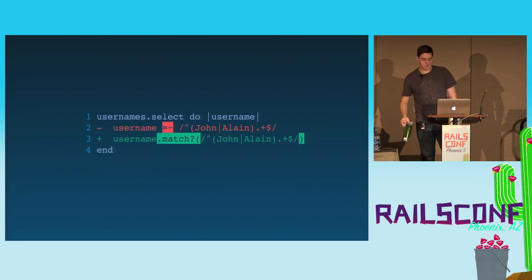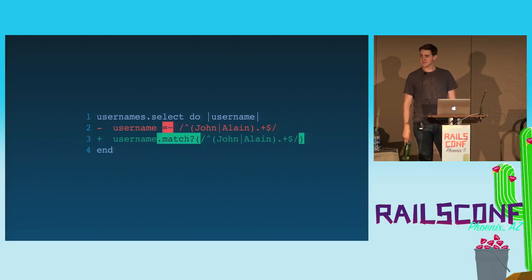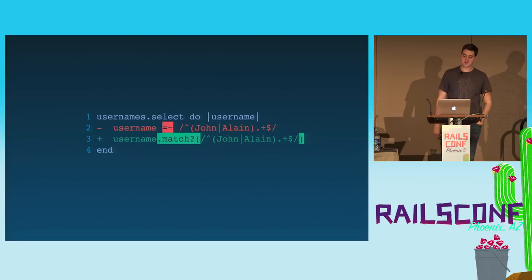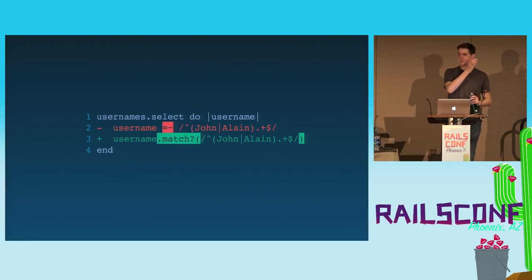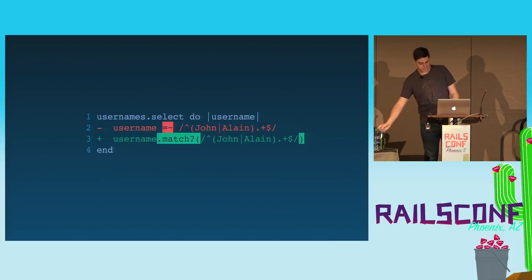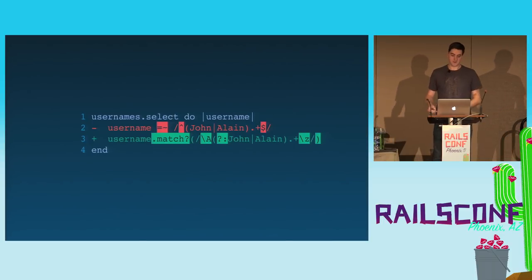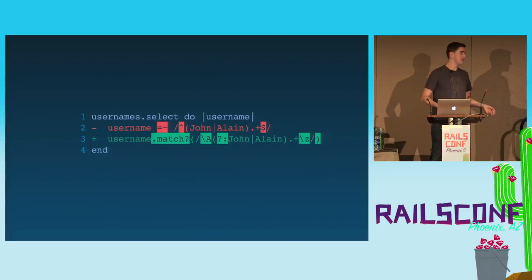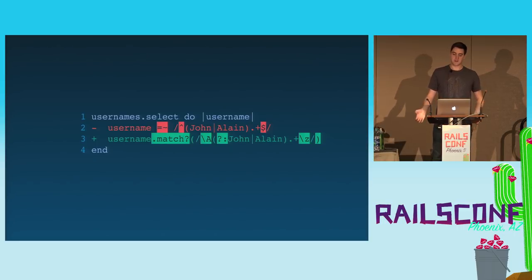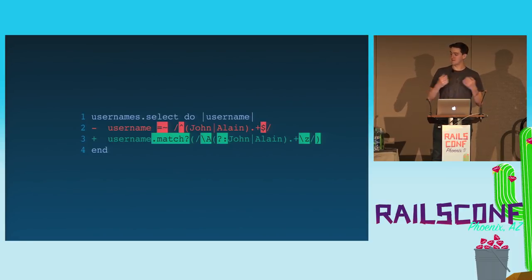Then finally, if we're running this on Ruby 2.4, it's going to say we can use the new match? predicate method. This method is new in Ruby 2.4 and it's about three times faster — it only returns true or false and doesn't set global variables, whereas every other regular expression method will set global variables regardless of whether you want them. Putting all these together, we get something that is more strict on input, better tested, more intention-revealing with the non-capturing group, and more performant. The cool thing is we didn't have to know about any of these Ruby features — we wrote what we knew, and the tool recommended all these changes.